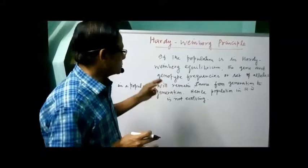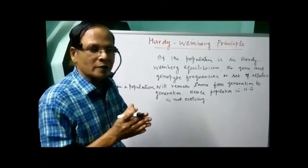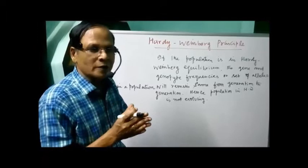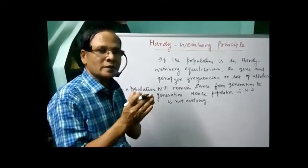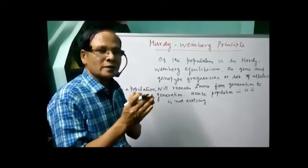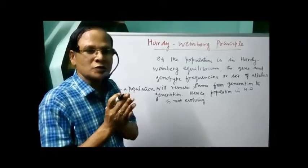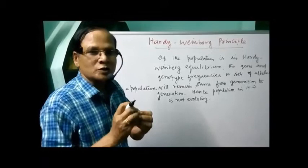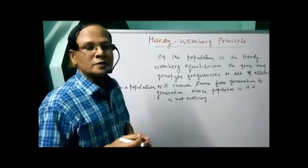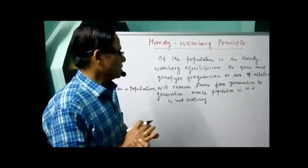Hardy-Weinberg equilibrium is possible only for large populations. It is possible only for randomly mating populations. Random mating means normal mating that occurs in an environment — not preferential mating, not assortive mating. For example, preferential mating is the mating between a lion and tiger. But in a random mating process, every individual has a chance to mate without any preference for a particular genotype.